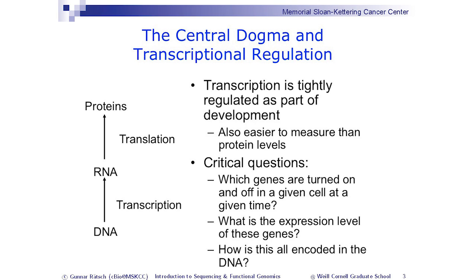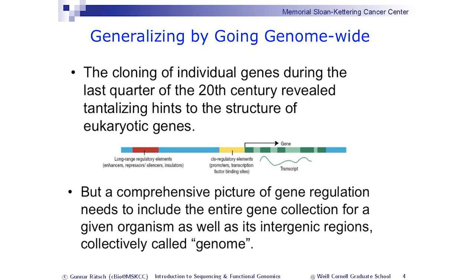You've seen this before: we go from DNA via transcription to RNA, and from RNA via translation to protein, and from the protein by interaction of these proteins we see higher-level phenotypes. Transcription is tightly regulated as part of development, so it's maybe easier to measure than protein levels. The critical questions are: which genes are turned on and off in a given cell at a given time, what is the expression level of these genes, and how is it all encoded in the regulatory program on the DNA?